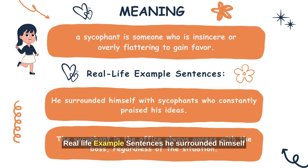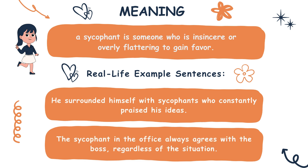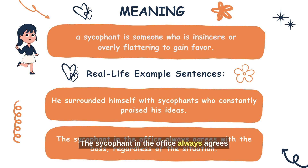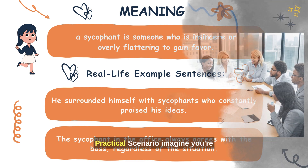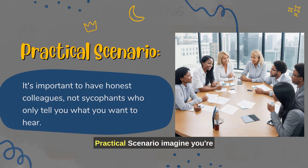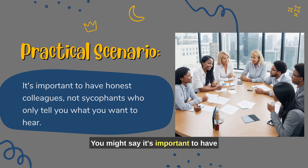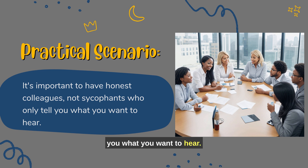Real-life example sentences: He surrounded himself with sycophants who constantly praised his ideas. The sycophant in the office always agrees with the boss, regardless of the situation. Practical scenario: imagine you're discussing workplace dynamics. You might say, 'It's important to have honest colleagues, not sycophants who only tell you what you want to hear.'